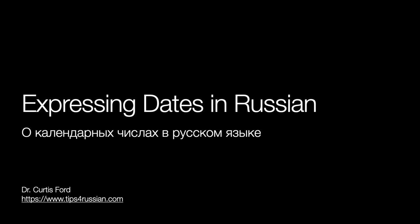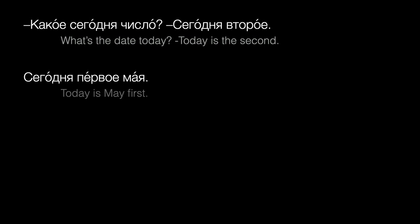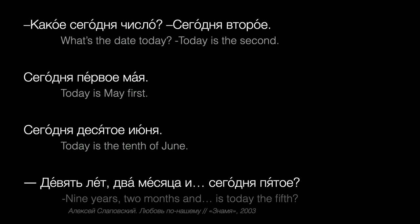In other videos, we've talked about years and months. What about specific dates? To ask about the date, we'll use the word число. Какое сегодня число? Сегодня второе. Сегодня первое мая. Сегодня десятое июня. Девять лет, два месяца и... Сегодня пятое.